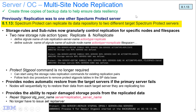Hi, welcome to this demo of IBM Spectrum Protect's multi-site node replication. This feature was introduced in version 8.1.13, and you can now replicate a Spectrum Protect server's nodes or file spaces up to two different target Spectrum Protect servers.